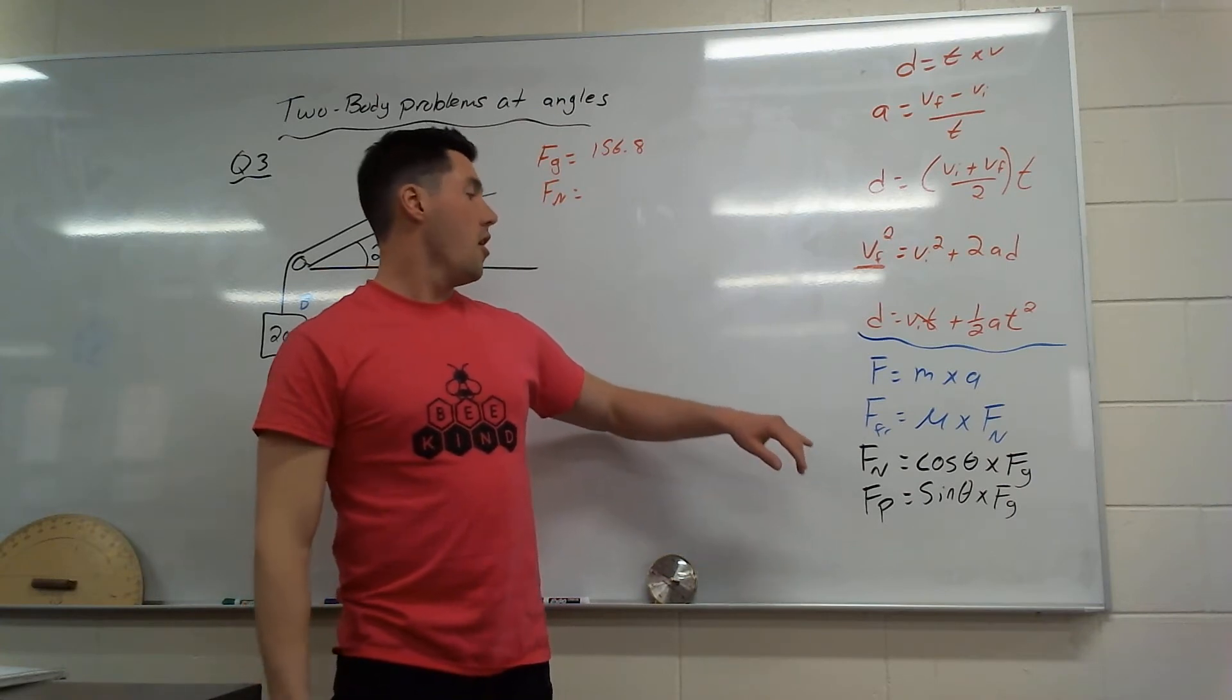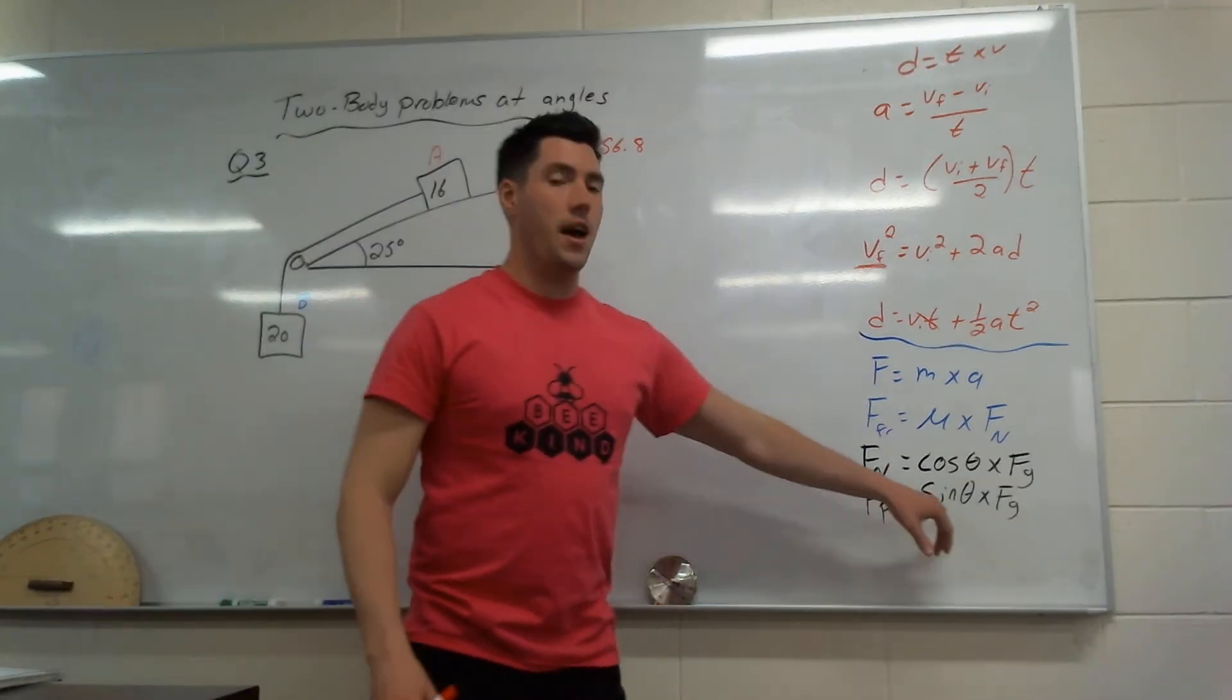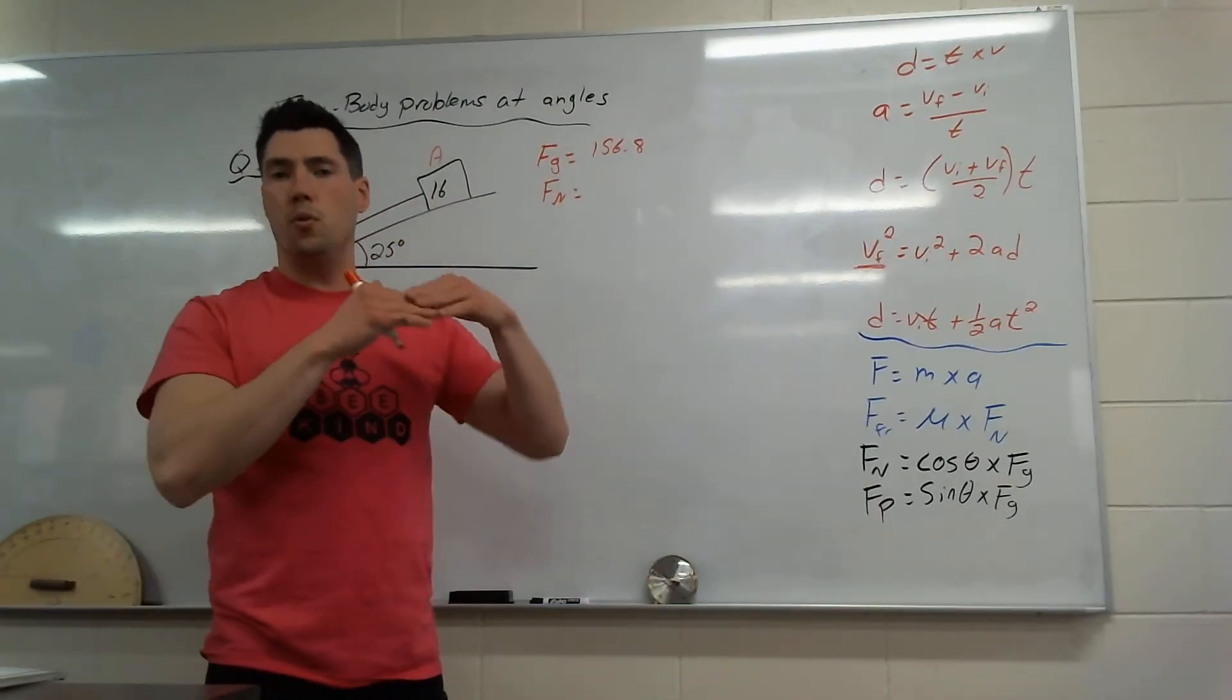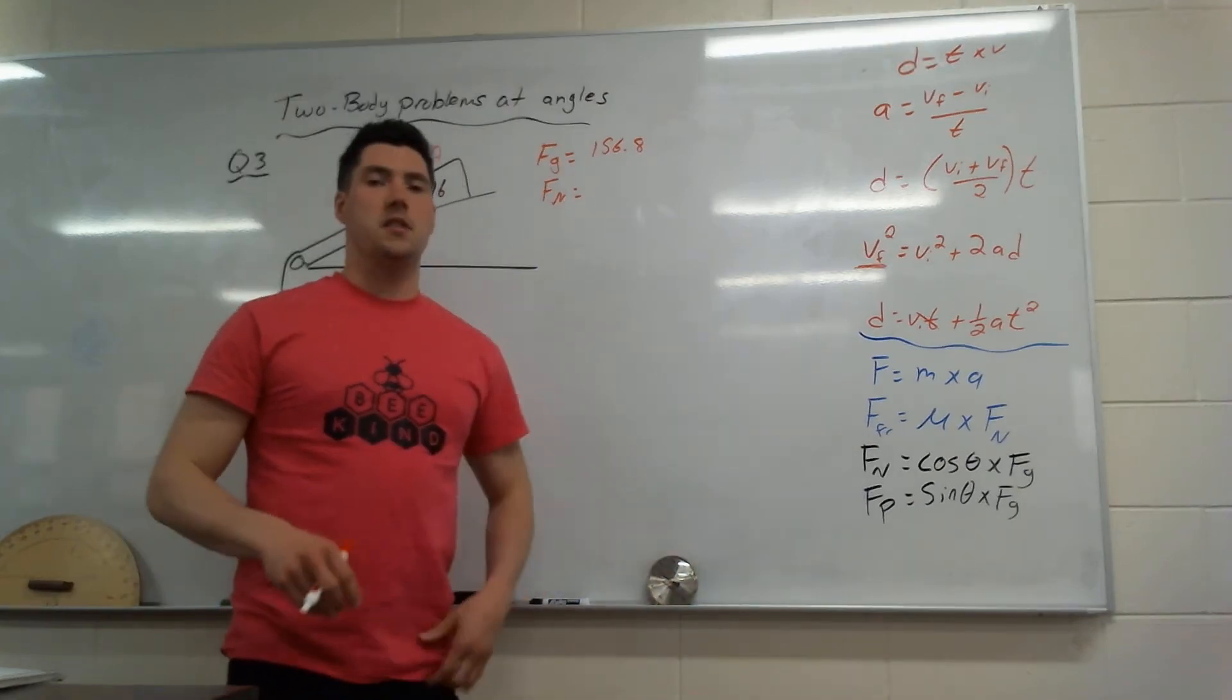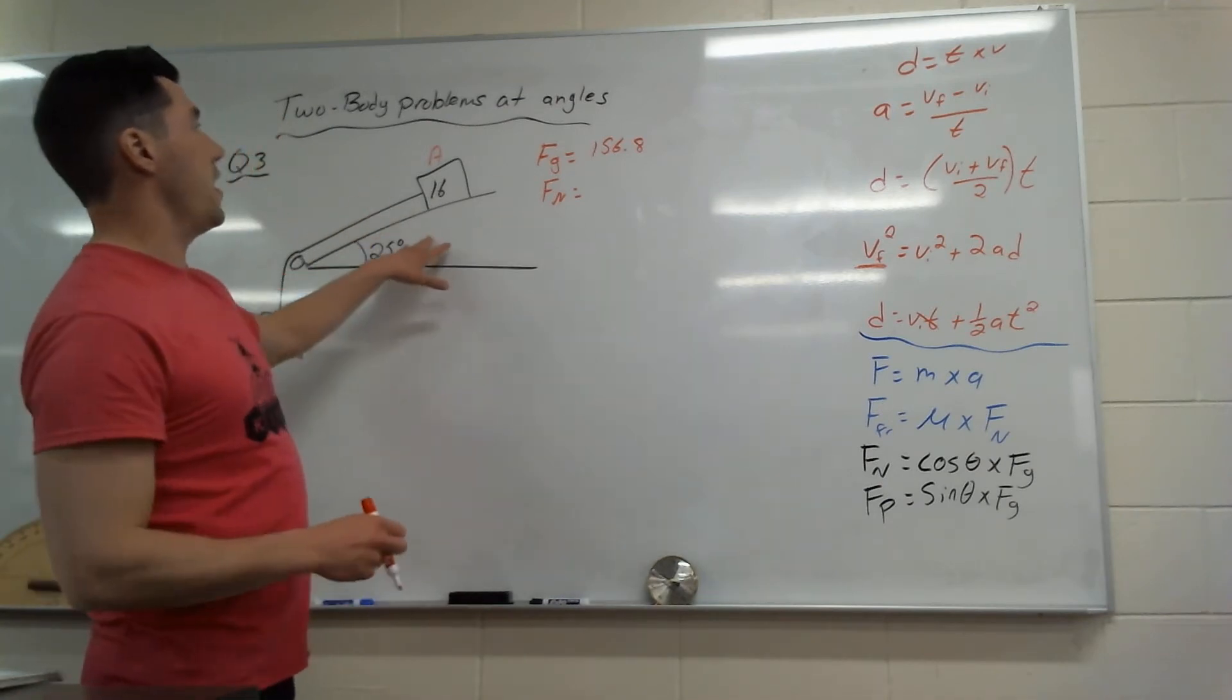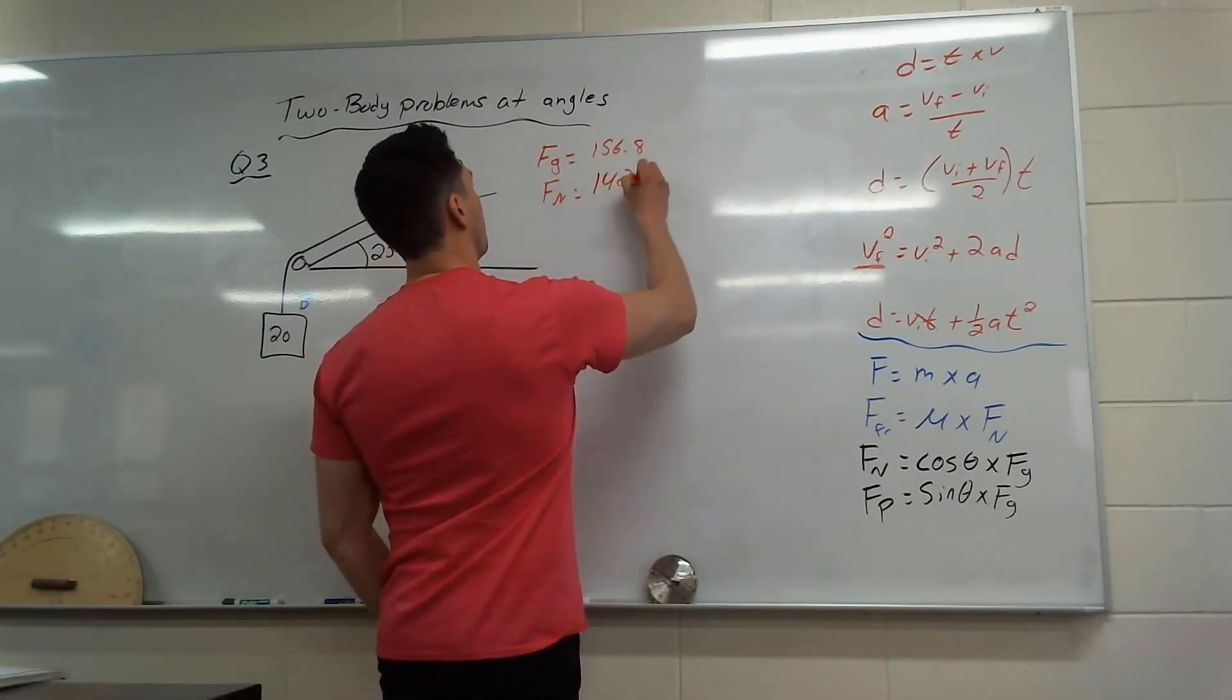Let's find that force normal. Anytime you have incline planes, I added these two little formulas here. Force normal is going to be cos theta times that force of gravity, and then that force parallel is going to be sin theta times force of gravity. These formulas are added into your formula sheet, which is in the files folder. So let's go through force normal. Cos theta times 156.8 gives me 142.1.